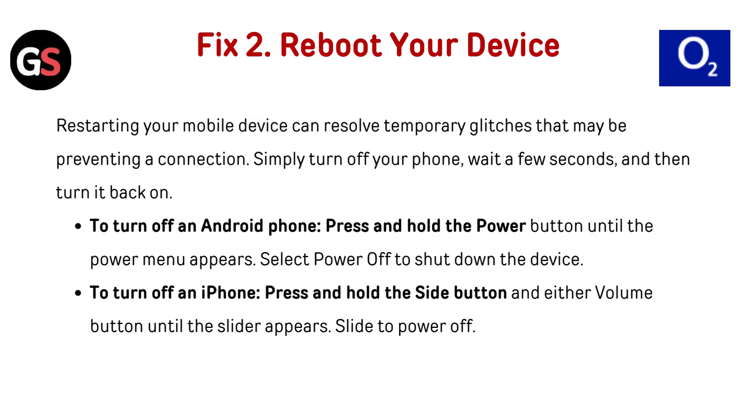To turn off an iPhone, press and hold the side button and either volume button until the slider appears, then slide to power off.